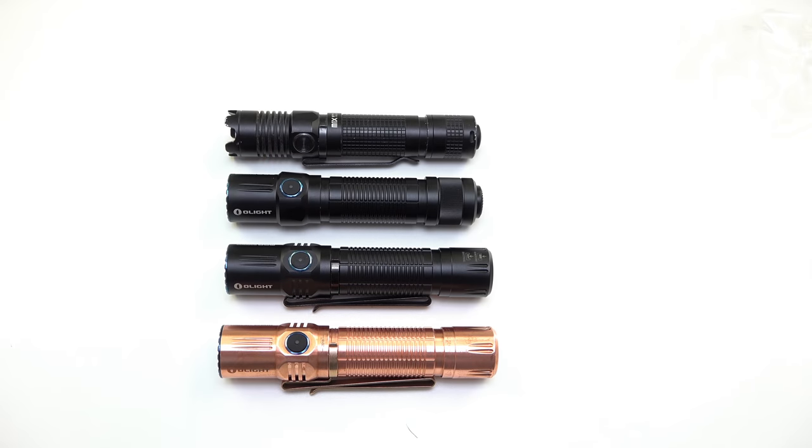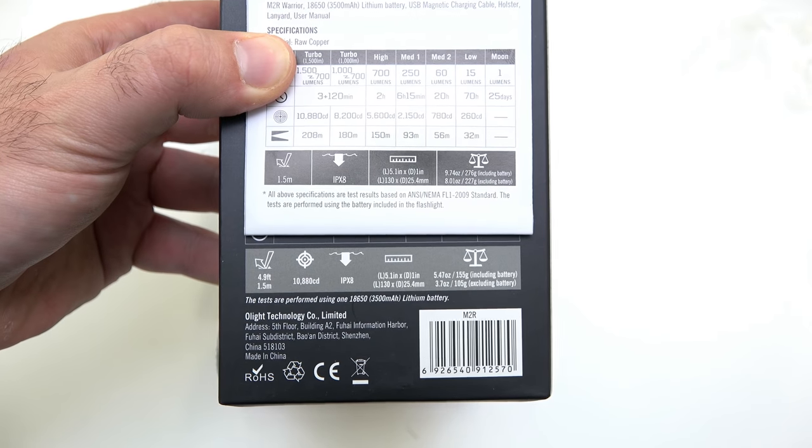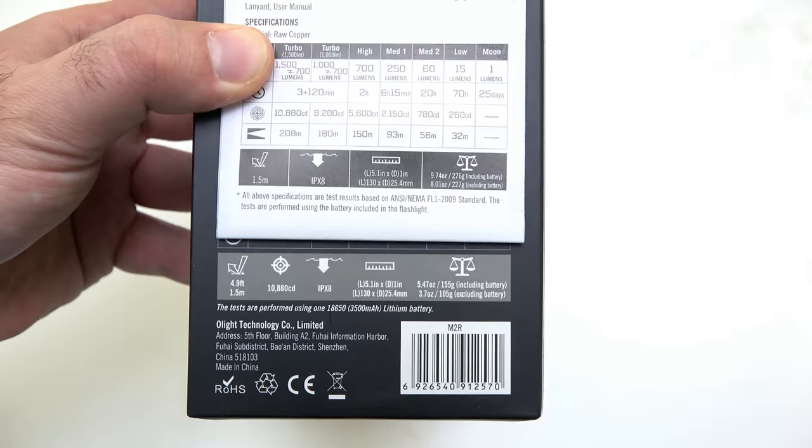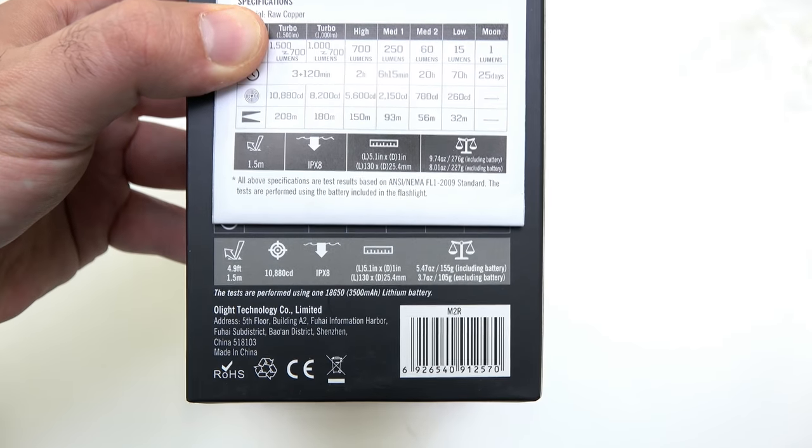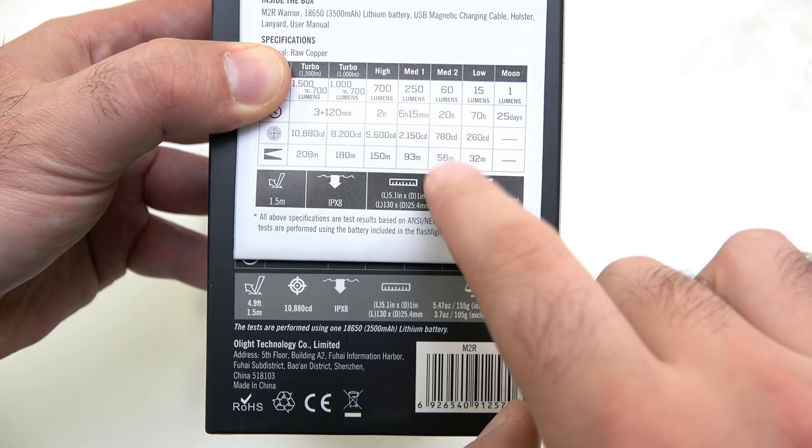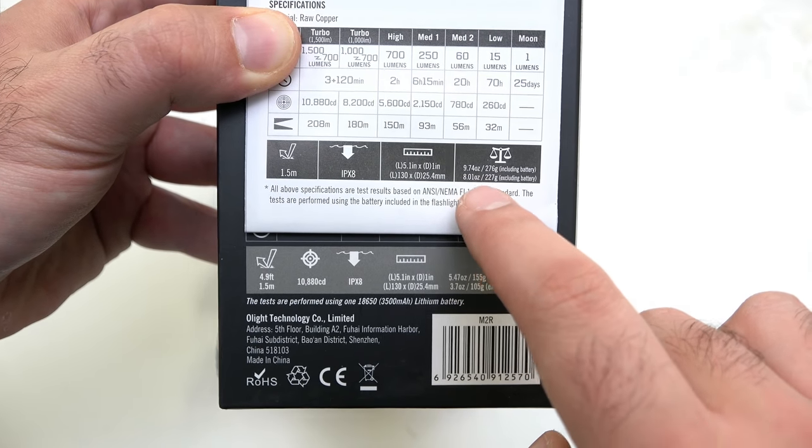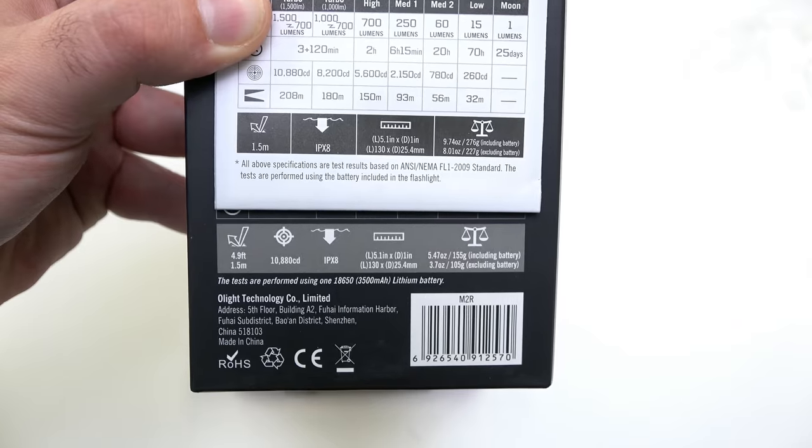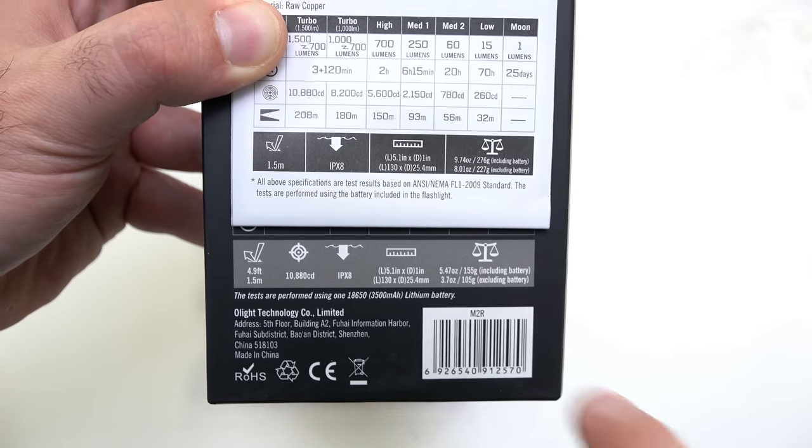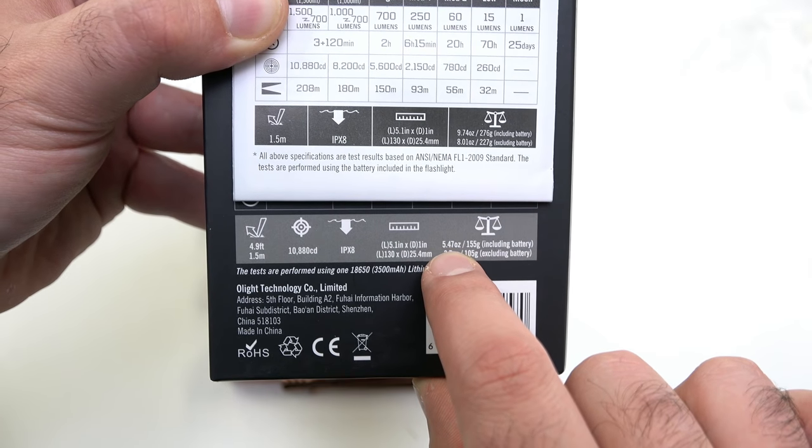I wanted to show you the huge difference between the M2R CU and the regular M2R. Here's the manual for the M2R CU, you can see that it's 9.74 ounces with the battery inside of it.